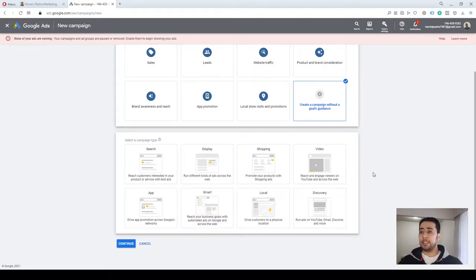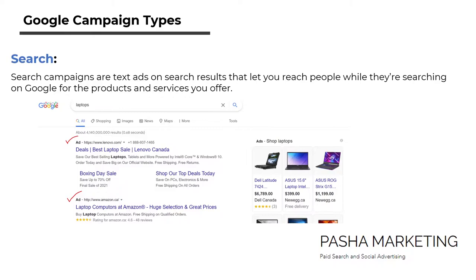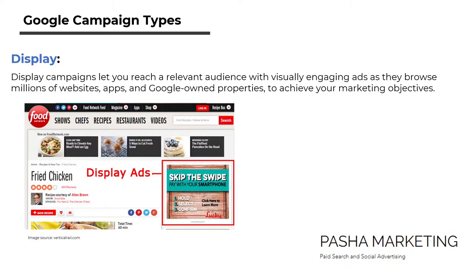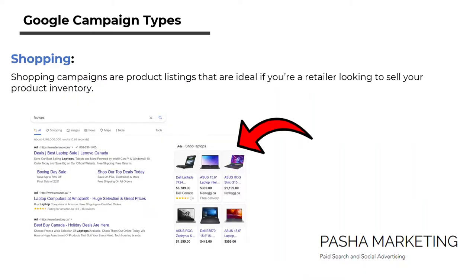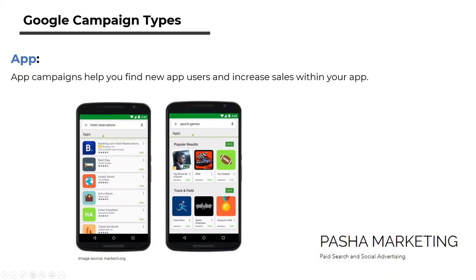After that, Google asks you to select a campaign type. There are many different campaign types on Google Ads. Search campaigns are text ads on search results that let you reach people while they're searching on Google for your products and services. Display campaigns let you reach a relevant audience with visually engaging ads across millions of websites, apps, and Google-owned properties. Shopping campaigns are useful for e-commerce and retailers. Video campaigns let you show video ads on YouTube and other websites. App campaigns help you find new app users and increase sales within your app.